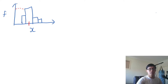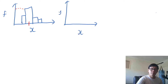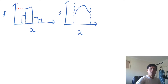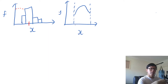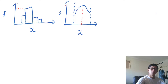With continuous probability distributions, it's very similar. We have our function here — let's say it looks like this. So this is our probability density function. The mode is the value with the highest probability density. In other words, it's the x value with the highest y value on our PDF. Another way to look at it is that it's the global maximum of our PDF.